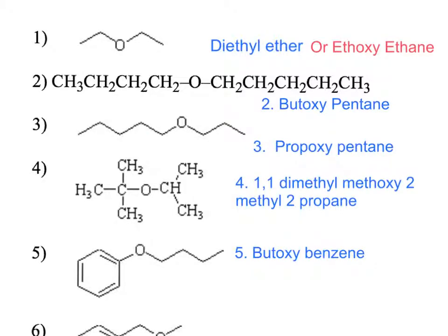In more complex ethers using the IUPAC system, if other functional groups are present the ether part will be dropped and is considered an alkoxy substituent. One names the longest chain first, and the smaller chain would be named as an alkyl group where we drop the -yl and add -oxy.